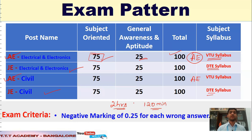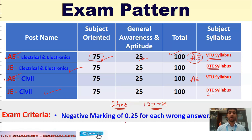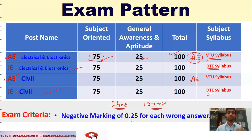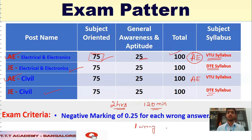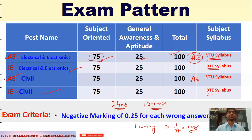One more very important thing: this examination has negative marking, so we have to be very careful with our answers. This is an objective-oriented examination. For every question, you will have four options and you have to select the right one. For each wrong answer, 1/4 mark — that is 0.25 marks — will be deducted. So this is your examination pattern.